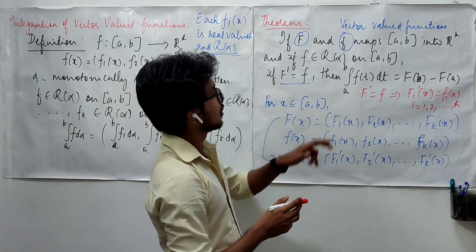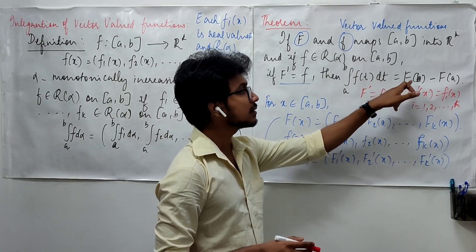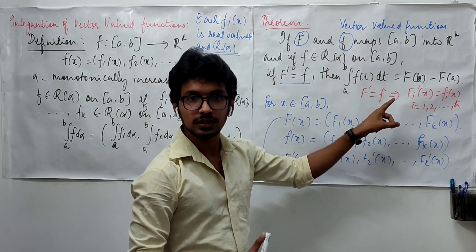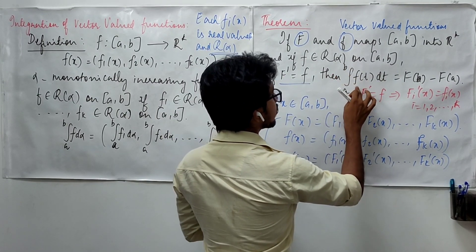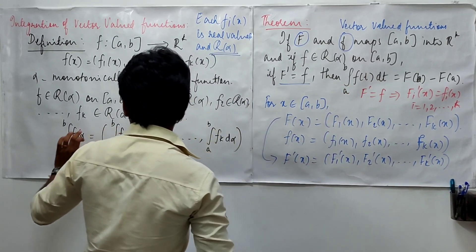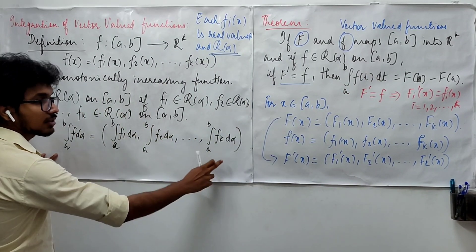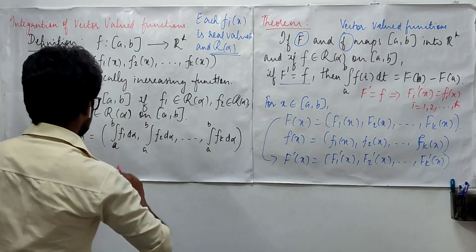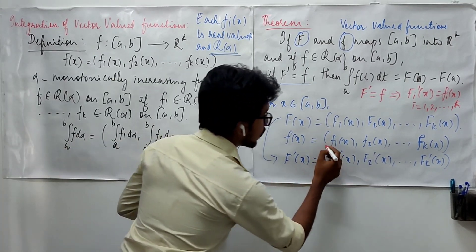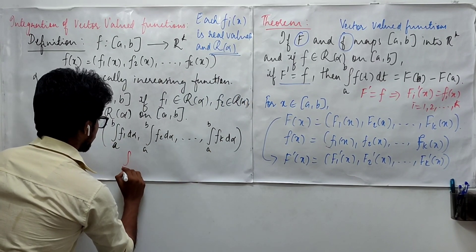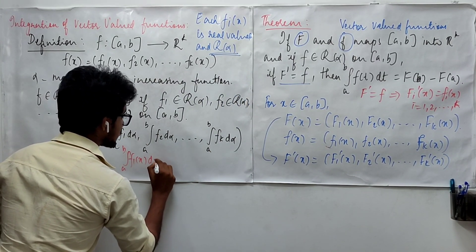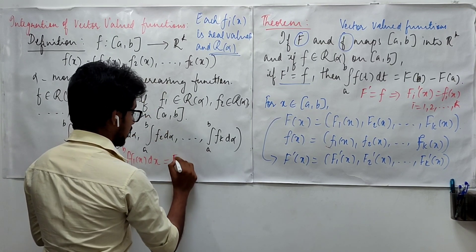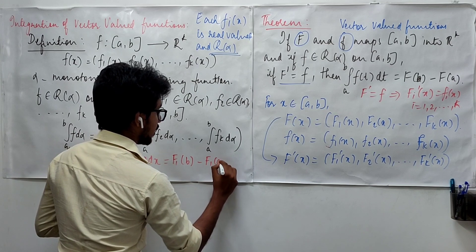Now, integral a to b f(t) dt is F(b) minus F(a). If you have to prove this, initially this means this is integrable. If this function is integrable, this is going to happen by using the fundamental theorem of calculus for this function. For this function, integral a to b f1(x) dx may be written as F1(b) minus F1(a).